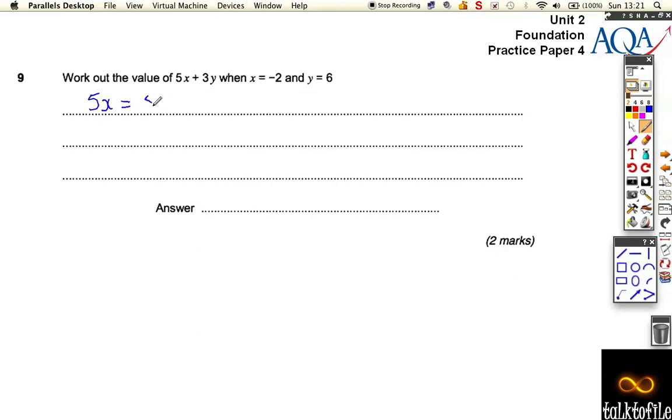That means five times x, or in our case five times minus two, because that's what x is worth. Now that is minus 10. Also, break down to work out what 3y is.